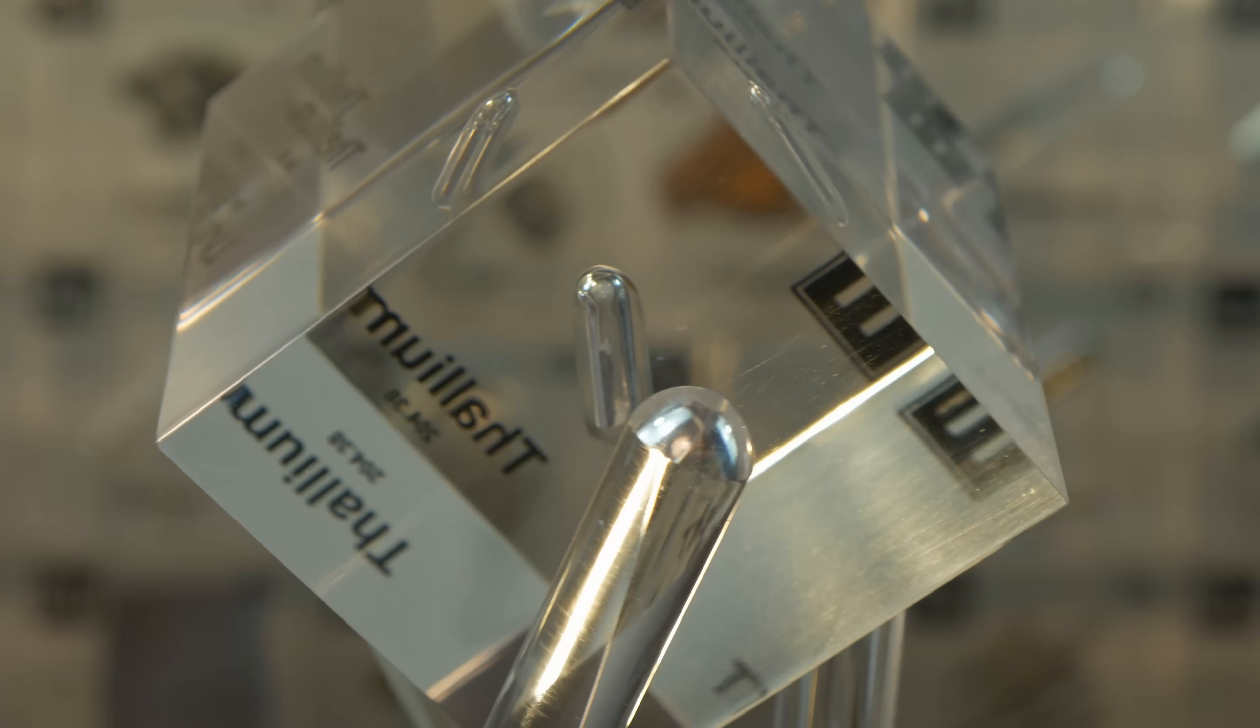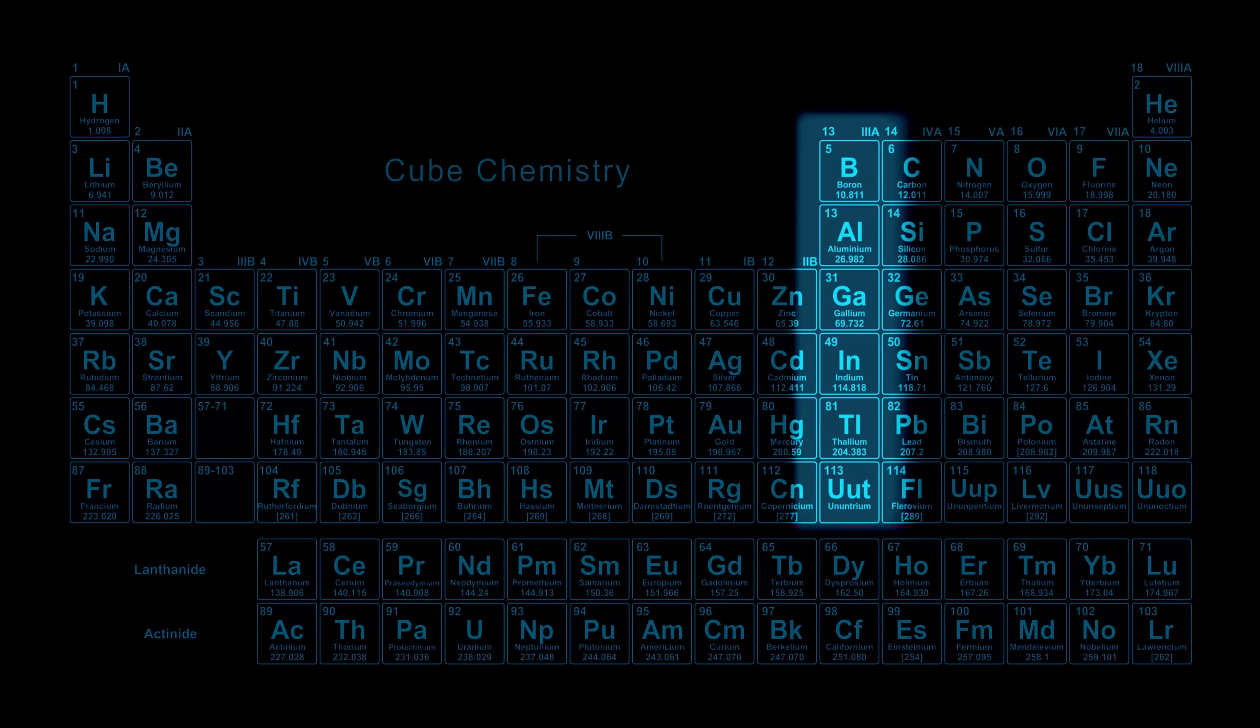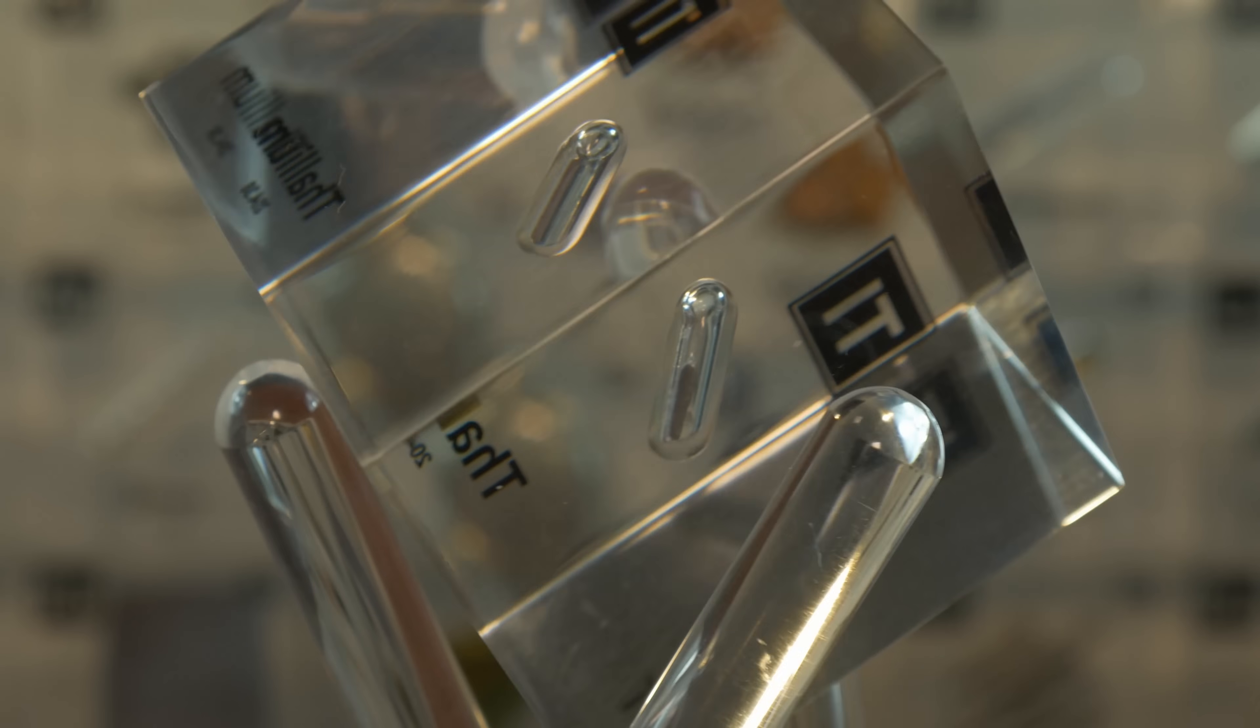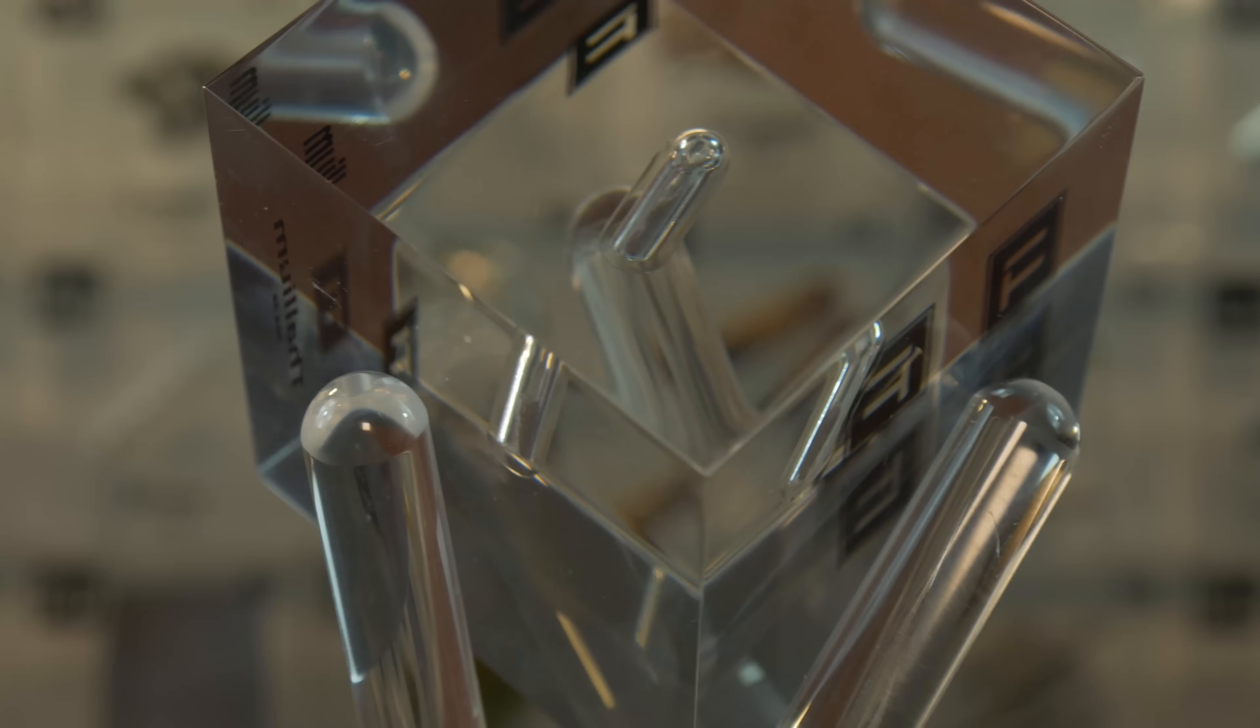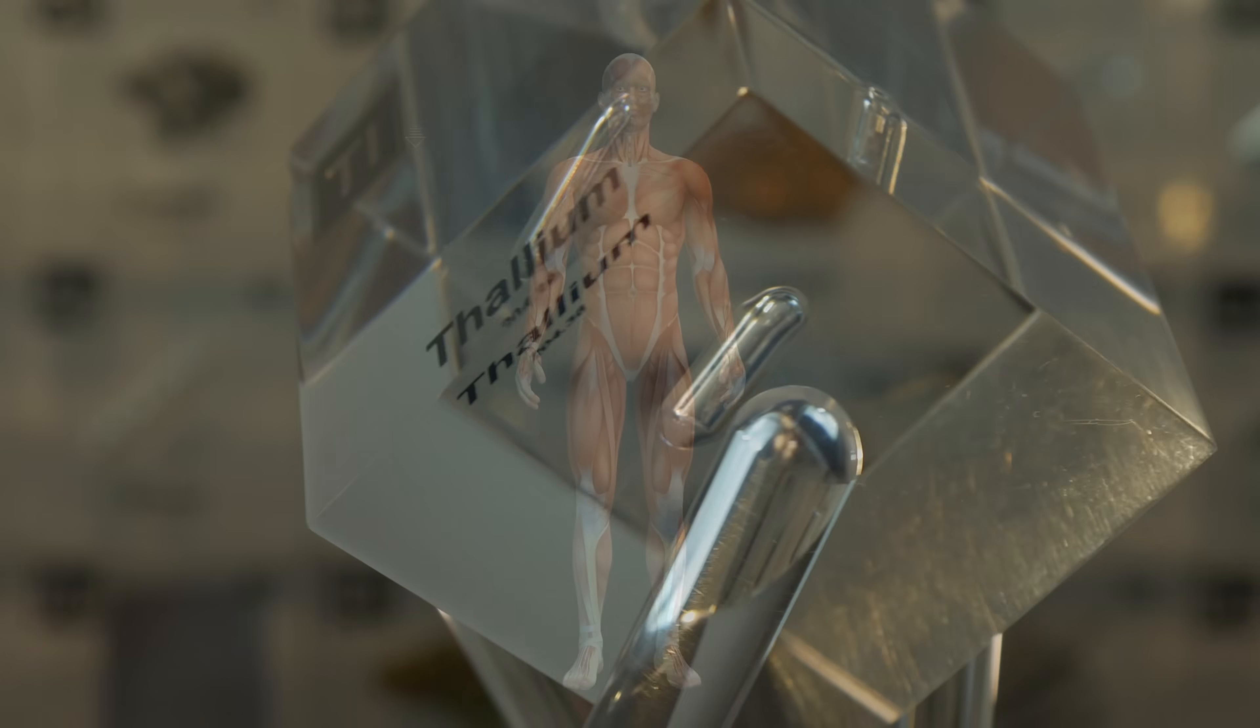Now, chemically, thallium is full of surprises. On the periodic table, it's element number 81, sitting in the boron-aluminum group. But it behaves a bit like a double agent. It can exist in a plus-3 oxidation state, like its lighter cousins aluminum or gallium. But it prefers a plus-1 state, more like the alkali metals. Think like sodium and potassium. Now, this matters because the thallium plus-1 ion is a master impersonator of potassium, a vital element in our bodies.